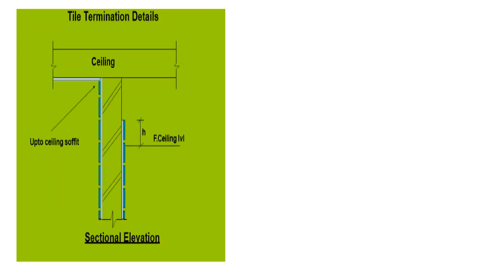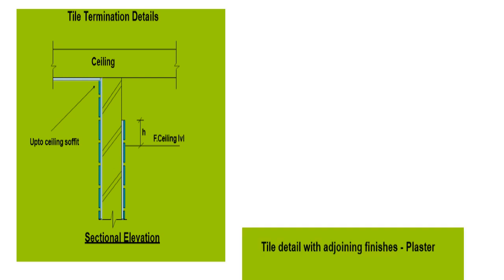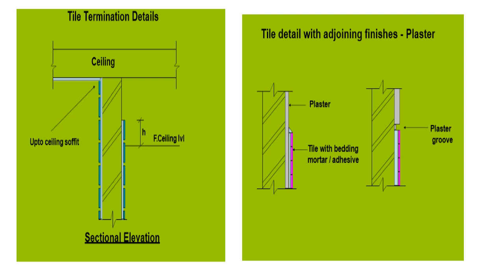The termination details — in the ceiling, how you are going to do a termination detail. Suppose the tiling has to be done up to the ceiling soffit, or only up to the false ceiling level — how to do it. The sectional elevation drawing has been shown in clear detail. The detail with adjoining finishes: whenever there is an additional finish coming down, how to do the tile finishing has been shown in this drawing. Tile with a bedding mortar, adhesives shown, and on top of it a plaster. If there is a plaster, a groove has to be provided, and how it is to be provided is also shown in this drawing.